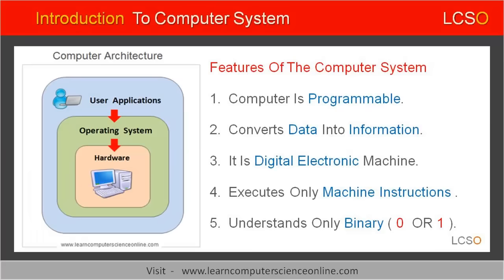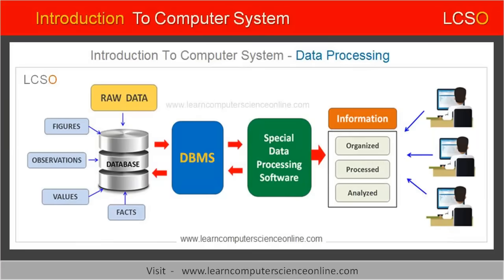The second feature is that the computer is used to process data. Data processing is one of the most common uses of computers. The computer processes the raw data and produces information. The raw data cannot be meaningfully used in its raw form. The raw data needs to be first converted to processed data so that it can be used for some meaningful work, such as decision making within an organization.